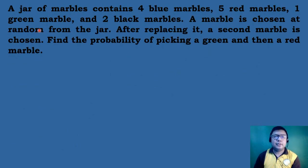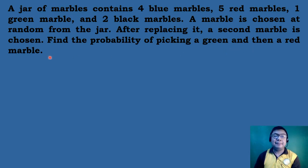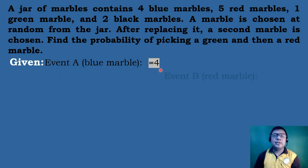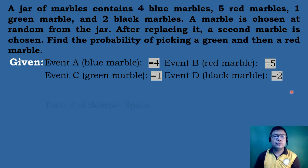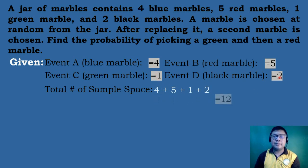Let's have another problem. A jar of marbles contains 4 blue marbles, 5 red marbles, 1 green marble, and 2 black marbles. A marble is chosen at random from the jar, and after replacing it, a second marble is chosen. Find the probability of picking a green and then a red marble. Event A, blue marbles, equals 4. Event B, red marbles, equals 5. Event C, green marble, equals 1. Event D, black marbles, equals 2. The total sample space is 4 plus 5 plus 1 plus 2, which equals 12.